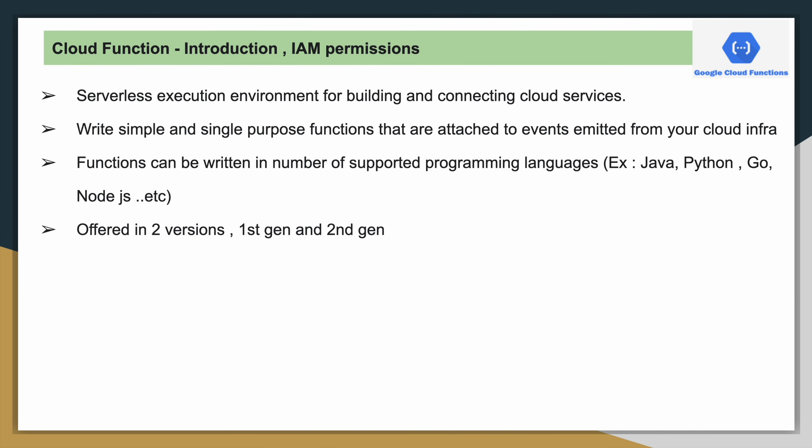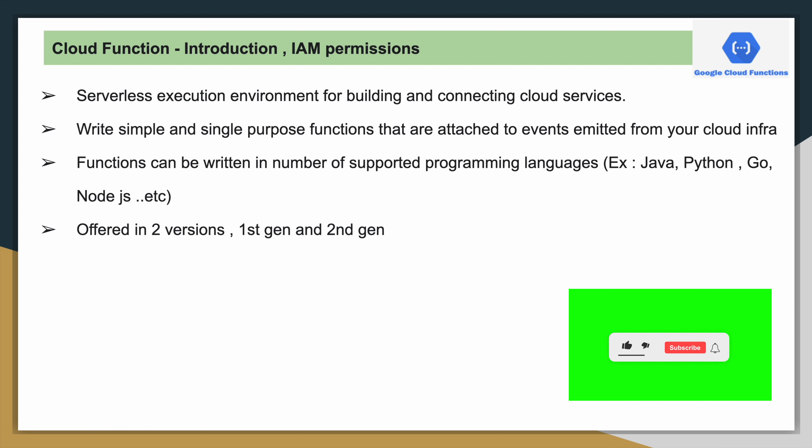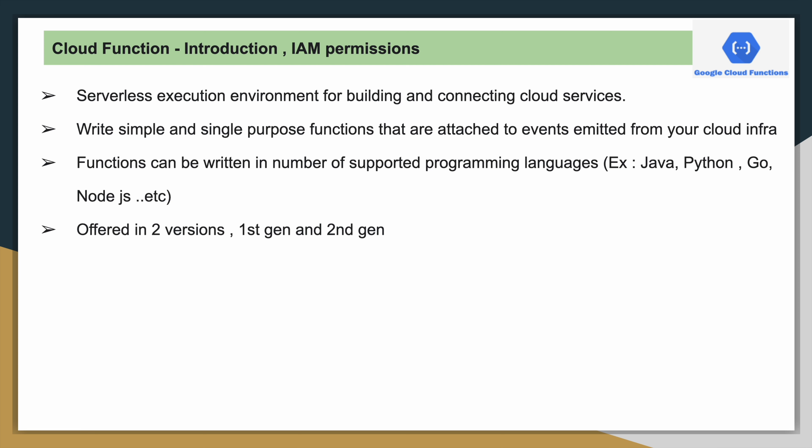Cloud Function is a completely serverless execution environment for building and connecting cloud services. We will see those use cases in detail in upcoming slides. By using Cloud Functions, you can write simple, single-purpose code which is attached to events emitted from other Google Cloud Services like Google Cloud Storage and BigQuery.